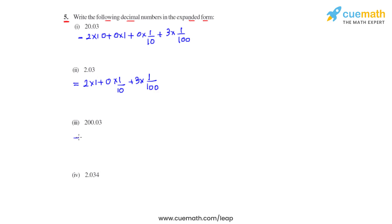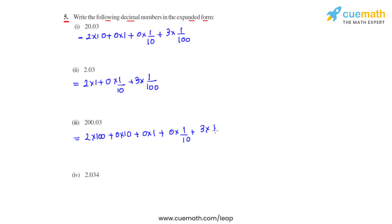Coming to the third part, we have 200.03. We write it as 2 times 100 because 2 is at hundreds place, plus 0 times 10 because 0 is at tens place, plus 0 times 1 because 0 is at ones place, plus 0 times 1 over 10, plus 3 times 1 over 100. This is the expanded form of 200.03.